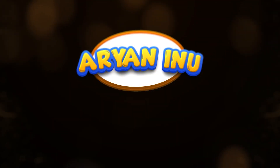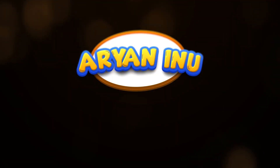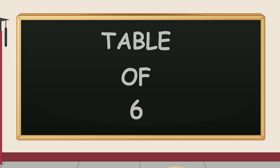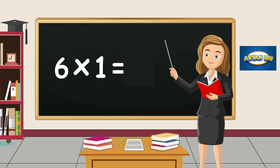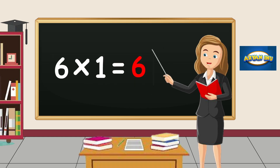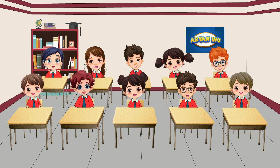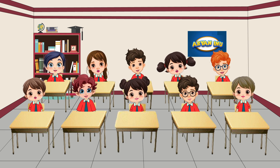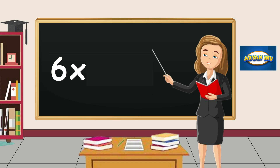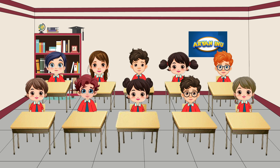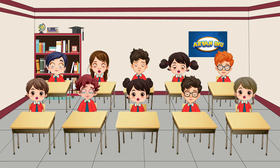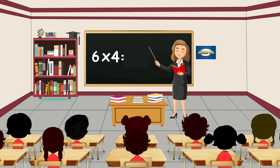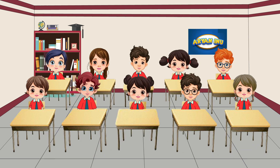Arian Inu Table of Six. Six ones are six. Six twos are twelve. Six threes are eighteen.